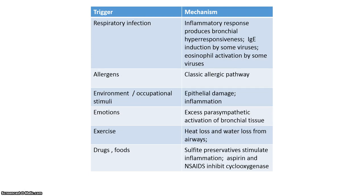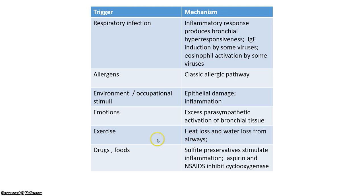This next slide shows a table of some of the triggers for asthma. Respiratory infection may trigger asthma due in part to inflammatory responses. Allergens also trigger asthma via classic allergic pathways involving inflammatory responses to something external or exogenous to the body. Additionally, environmental or occupational stimuli — things like chemicals, dust, or smoke — can induce epithelial damage and inflammation. Emotions can produce airway constriction. Exercise can also trigger an asthma attack, mostly because of the loss of water and heat from airways, so people who exercise in cold weather may be more likely to experience this. There are also a number of foods and drugs that can be linked to asthma attacks.